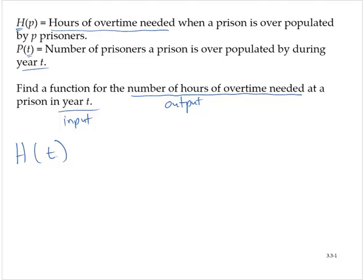We need a function whose input is the time, year t, and whose output is the number of hours of overtime needed. Notice that for p of t, the input is the year, and the output is the number of prisoners the prison is overpopulated by.